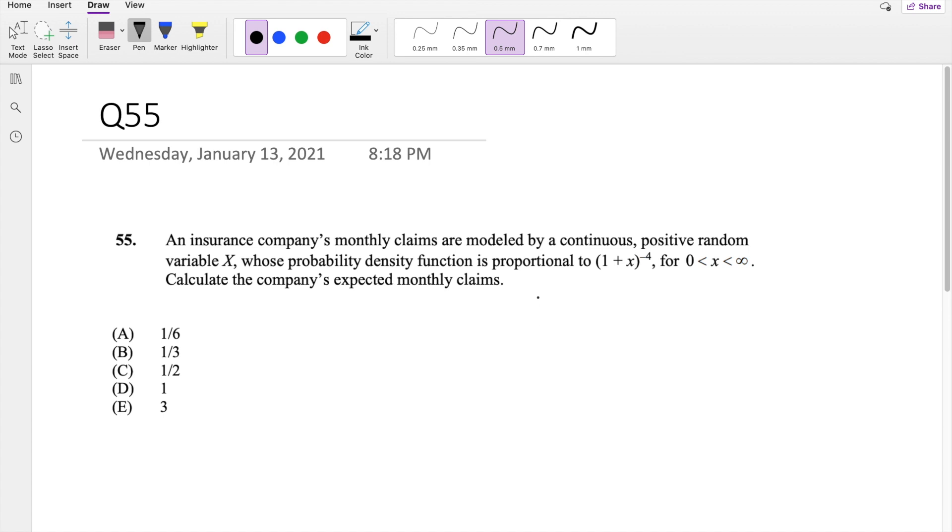So they're saying some probability density function is proportional to this thing right here. So that means there's some constant c such that this is proportional to 1 plus x to the negative 4. And we know with all probabilities, when you integrate it along the entire interval, you're going to have to get 1, because all probabilities add to 1. So taking the antiderivative, you get 1 plus x, adding 1, so that's negative 3. Negative c over 3, integrating from 0 to infinity.